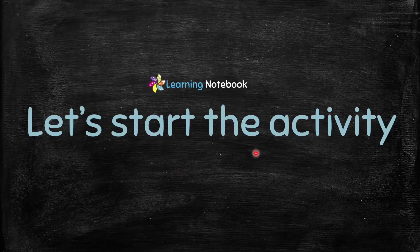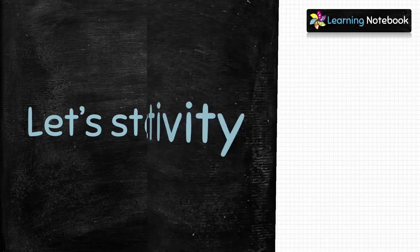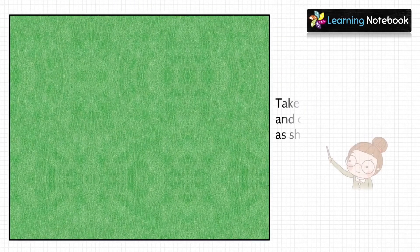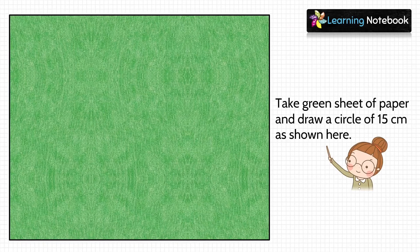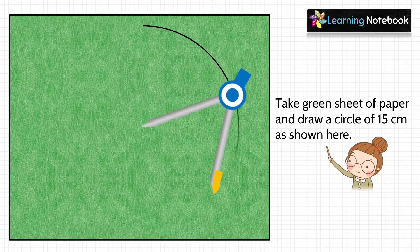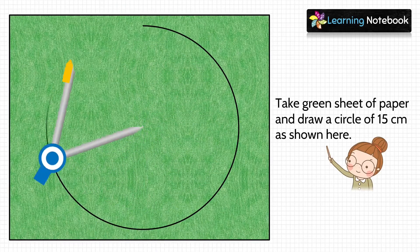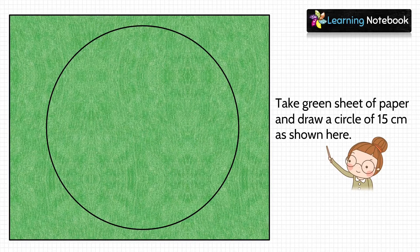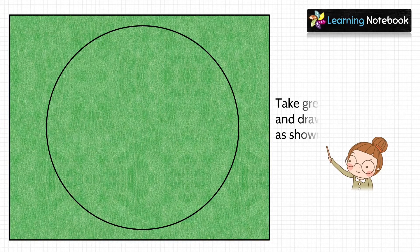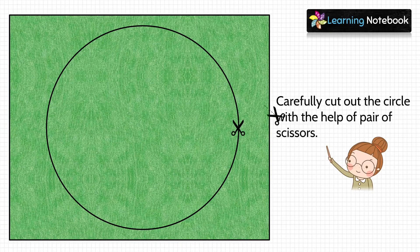Now let's start with our activity. In the first step, take the green sheet of paper and draw a circle of 15 centimeters as shown here. Then carefully cut out this circle using a pair of scissors.